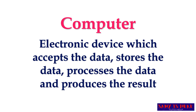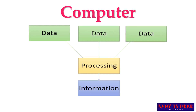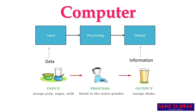Now we can easily define the computer. It is like a calculator but more powerful. A computer is an electronic device which accepts data, stores the data, has the capacity of processing, and finally produces information or a result. Diagrammatically, we put data into the computer, after processing we receive the information.